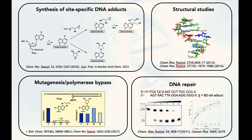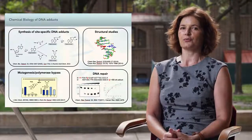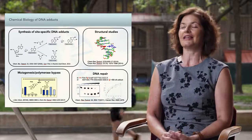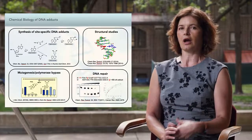We then use solid-phase synthesis to generate small pieces of DNA containing these unnatural nucleobases. We then use the tools of molecular biology to incorporate the synthetic DNA into cellular DNA, and work with cell culture to investigate the outcomes of these chemical modifications in cells. This work enables us to understand the chemistry of DNA damage and the mechanisms of how it affects cellular function — such as DNA replication, transcription — and to establish repair mechanisms of such damaged bases.